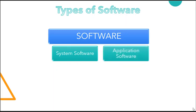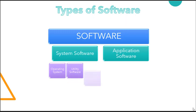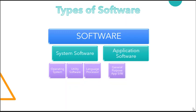System software is further divided into three parts: first, operating system; second, utility software; and third, language processor. In the same way, application software is divided into two types: first is general purpose application software, and the other is specific purpose application software.